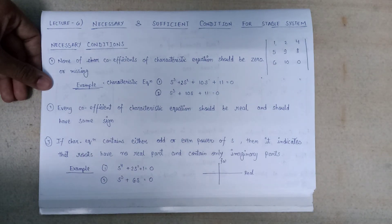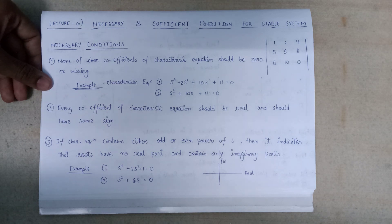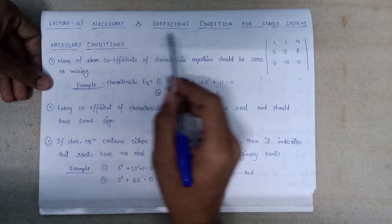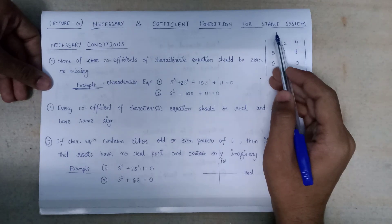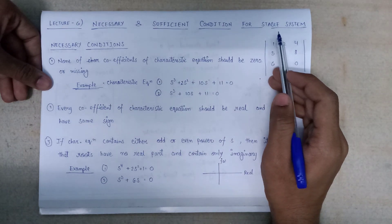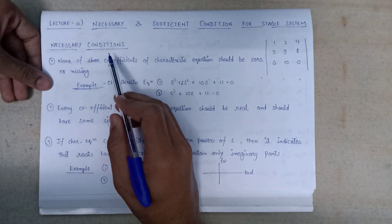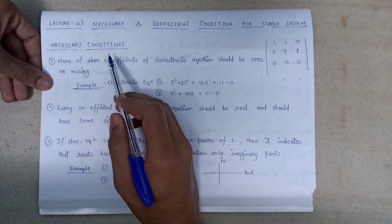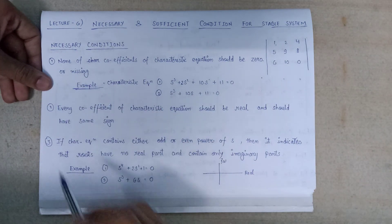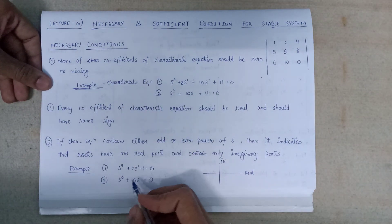Welcome all, this is lecture number 6 of the Routh Array series. In this lecture we are going to discuss the necessary and the sufficient conditions for the system to be stable. Let's discuss the necessary conditions — there are three necessary conditions which should be satisfied for the system to be classified as a stable system.